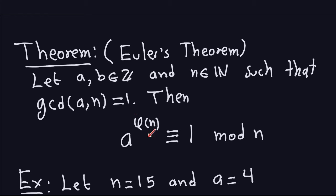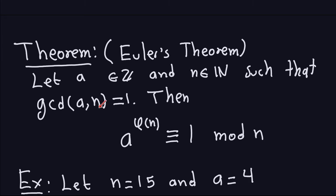Remember, the phi function gives me all the numbers from 0 to n minus 1 that are relatively prime to n. The theorem requires we have an integer a and a natural number n such that the greatest common divisor between a and n is equal to 1 — basically they are relatively prime, or in other words, a and n do not have any common factors.